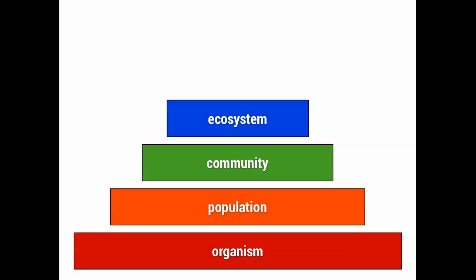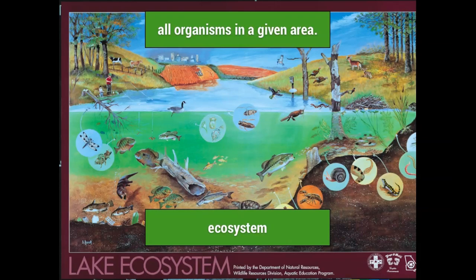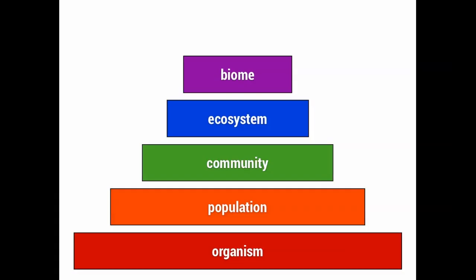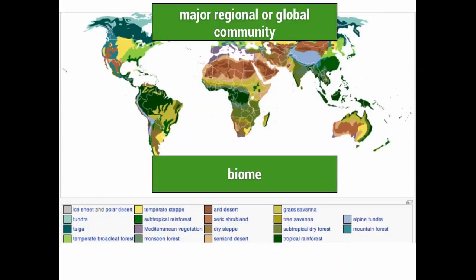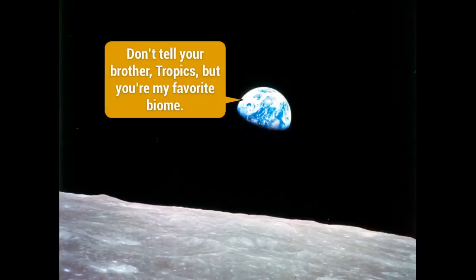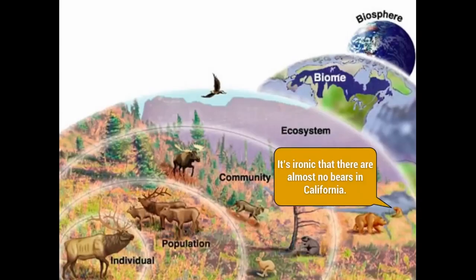The next level of organization in ecology is the ecosystem. An ecosystem, such as this lake ecosystem, is all the organisms in a given area. Above the ecosystem, however, is the biome. Biomes are major regional or global communities such as major deserts or grassy savannas. The only thing larger than the biome is the biosphere, which includes all living things on Earth.